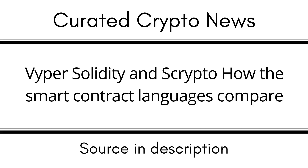Transactions on Ethereum are usually a call to a smart contract, since dApps and tokens on Ethereum are smart contracts. In contrast, transactions on Scrypto involve moving assets from one component to another. For example, if User A wants to send 10 custom tokens to User B, the transaction shows a withdrawal of 10 tokens from the vault containing them, and those tokens are sent to the deposit method of User B's account component. A bucket container is used to transfer the tokens from User A to User B — transferring a bucket containing the resources to the deposit method of the second user.